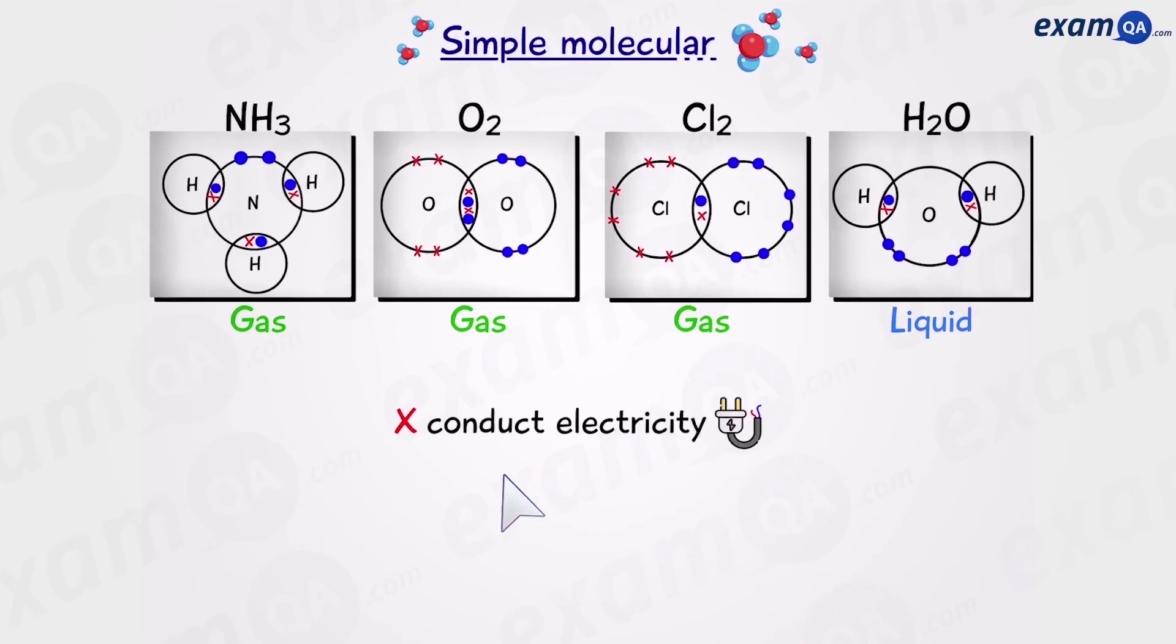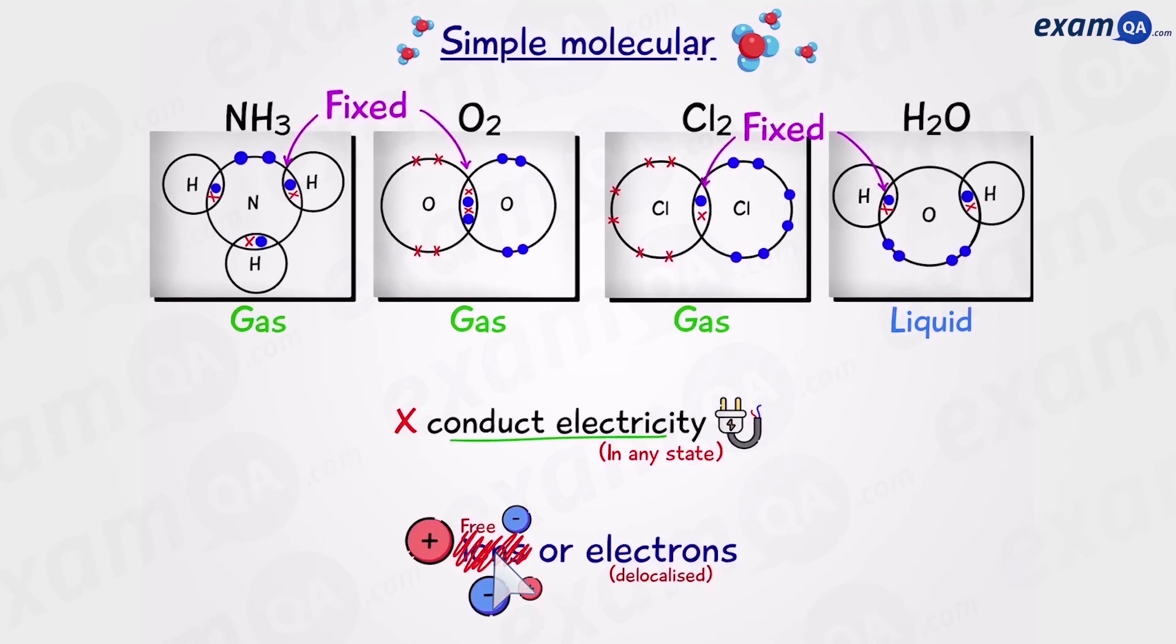Also, they don't conduct electricity in any state. In order for a substance to conduct electricity, we need either free ions or free electrons, also known as delocalized electrons. Now, in covalent bonding, we don't have any ions present anyway. Now, as for the electrons, they are found fixed on the atoms or used up in bonding. So, there are no free electrons and therefore, these substances cannot conduct electricity, no matter what state they're in.